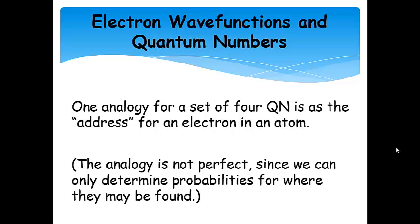One analogy for the set of four quantum numbers is like an address for an electron in an atom. The analogy isn't perfect since we don't know exactly where the electron is or its path, but it works well because one electron gets one address, and no other electron can have the same exact address.